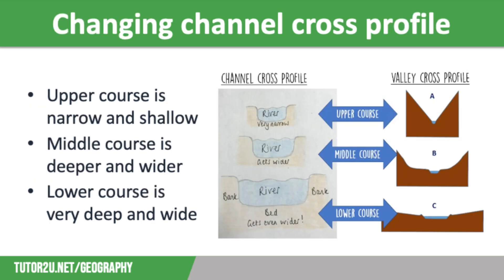So how does a channel cross profile change as you move downstream? Remember the channel cross profile is a sideways look at the river only. In the upper course, the channel cross profile is very narrow and quite shallow. This is because there isn't a huge amount of erosion taking place and this erosion is mainly vertical.